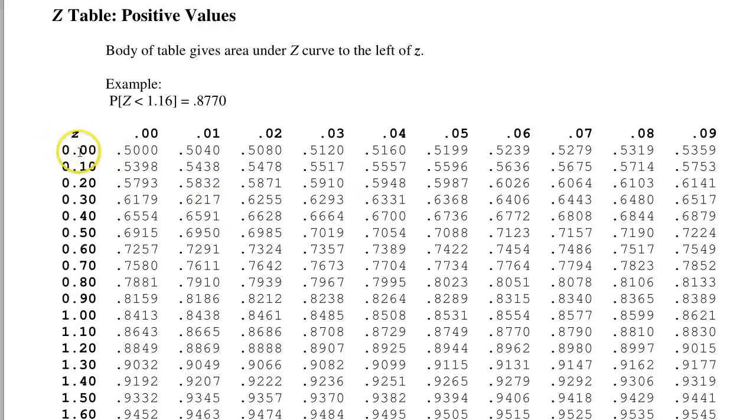So here I'm at 0. The number I had was 0.65. So 0.6 right here, 0.60, 0.61, 0.62. The number I had was 0.65. If you'll notice, it lines up with the 0.05 right up here. So 0.65 is this number, 0.7422. That's our probability.